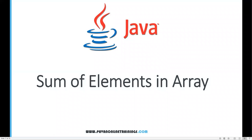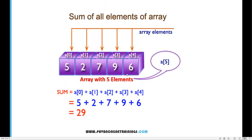Hi everyone, welcome. In this video I'm going to show you how to find the sum of elements in an array. Here I have an array which contains five different elements. Every element can be located by using an index number: a[0], a[1], a[2], a[3], and a[4]. The index starts from zero, so the maximum index is n minus one, which is four. To find the sum, we need to extract each and every element and add them all into a sum variable.